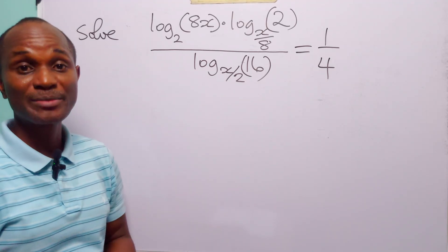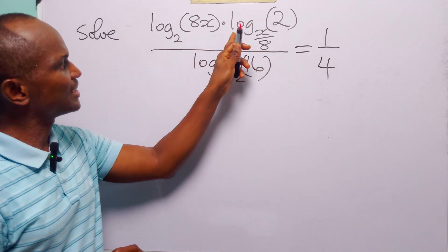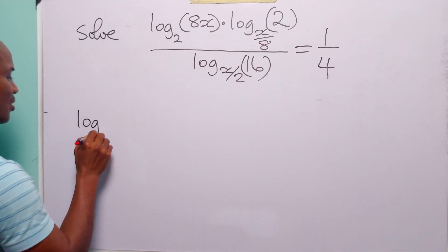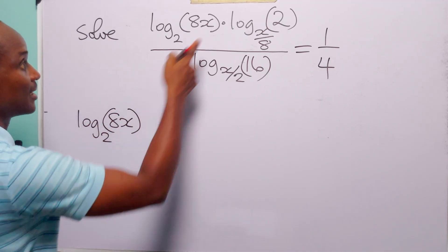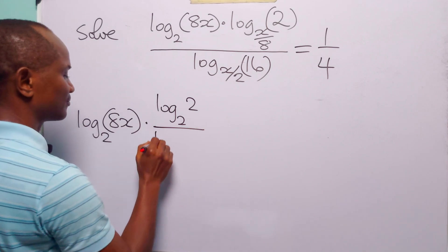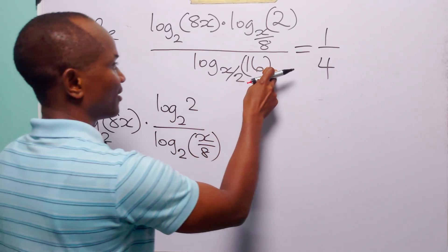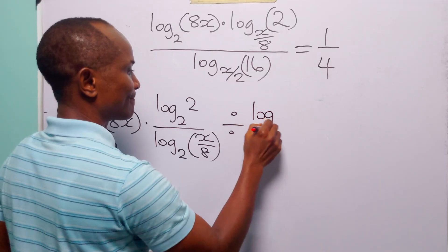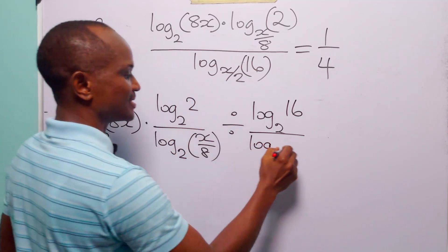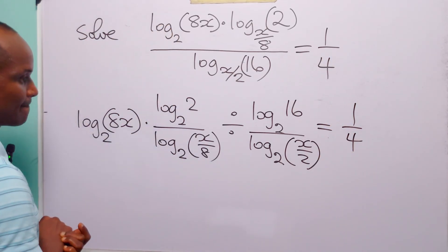Hello and welcome. To solve this logarithmic equation, let us start by changing the base of these two logarithms to base 2 to match this one. When we apply the change of base formula for logarithms to these two terms, this equation becomes: log base 2 of 8x, multiplied by log base 2 of 2 over log base 2 of (x/8), then divided by log base 2 of 16 over log base 2 of (x/2), and this equals 1/4.